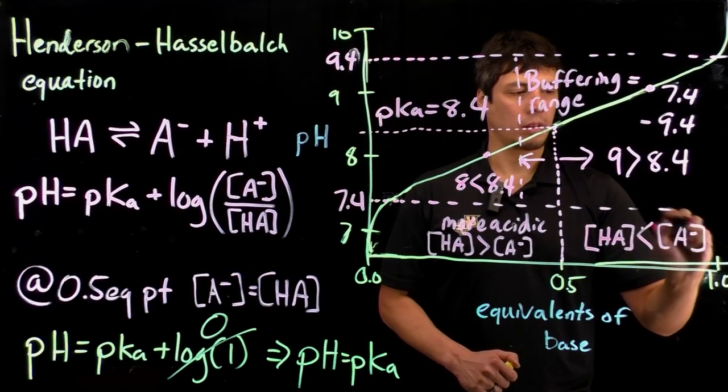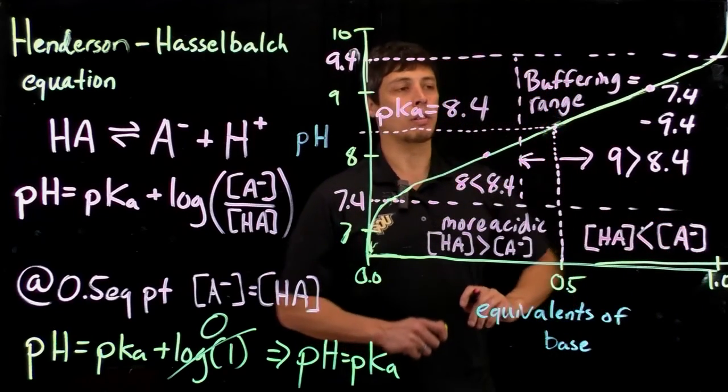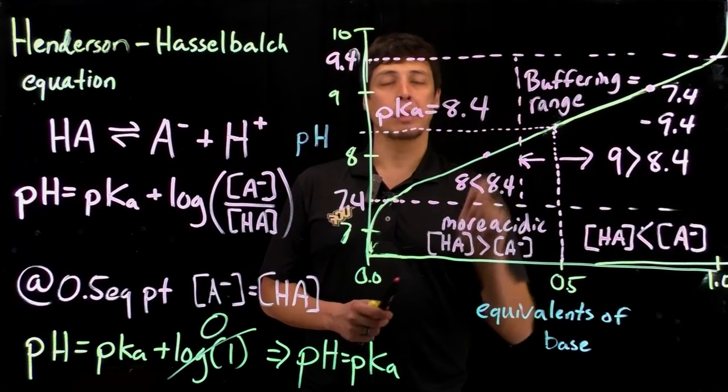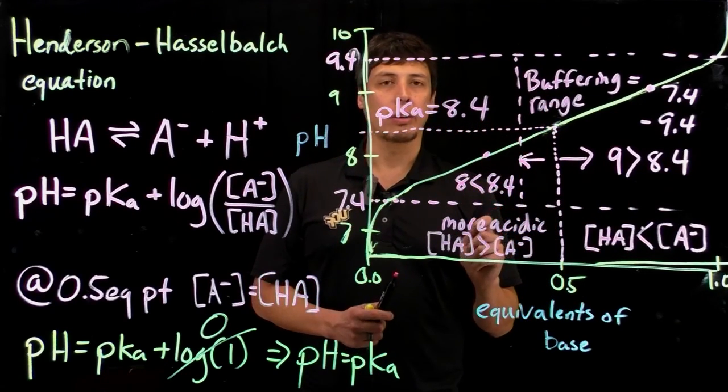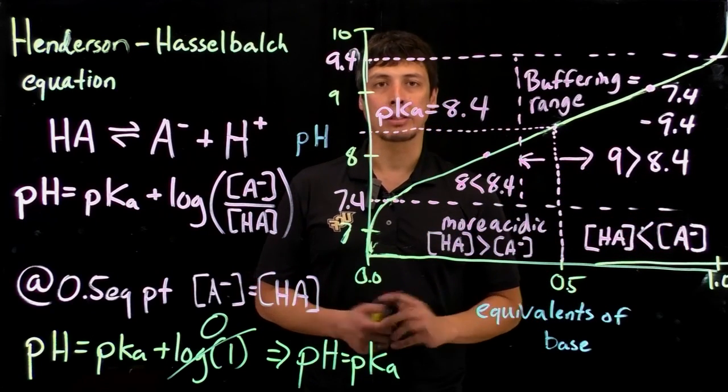Conceptually, what we want to know then is do we have more acid or base? If we know the pH and the pKa, we can quickly figure out are we favoring formation of the conjugate base or the acid in those conditions.